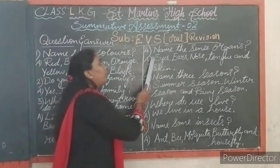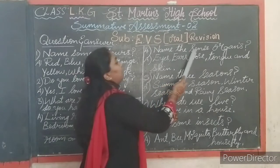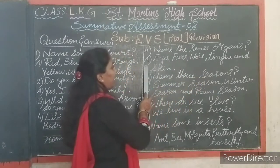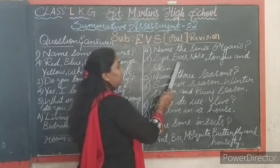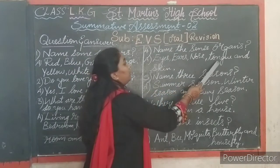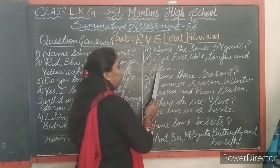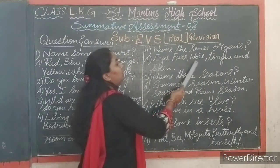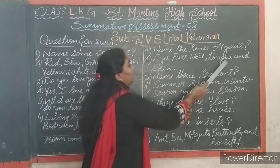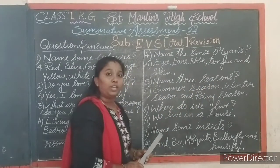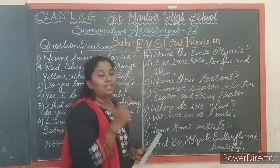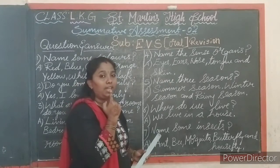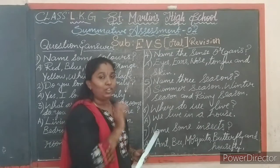Next question. Fourth question: name the sense organs. Answer — eyes, ears, nose, tongue and skin. Tell me children, what are the sense organs? Yes — eyes, nose, ears, tongue and skin.